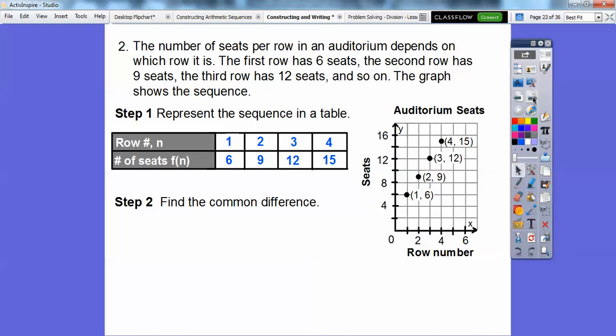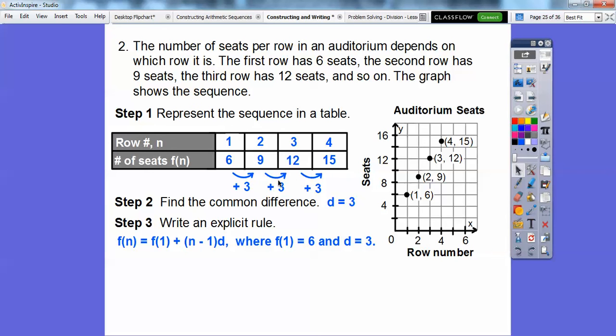Let's find the common difference. That is plus 3, plus 3, plus 3, so d equals 3. Write an explicit rule. There's our formula. We know our first term is 6 and d is 3, so we just plug that in and we get f(n) = 3n + 5.